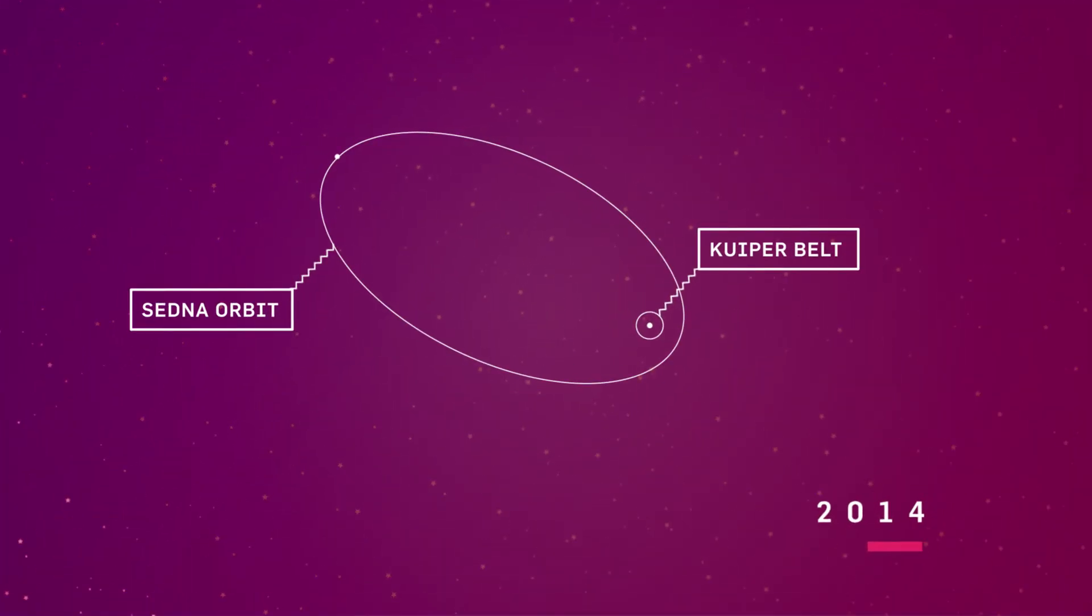More than a decade later, in 2014, scientists discovered another Sedna-like body, called 2012 VP113, that also has an eccentric orbit.